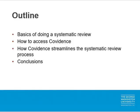Here is an outline of the topics that will be covered in this session. First, we'll look at the basics of doing a systematic review. After that, we'll briefly discuss how to access Covidence and get an account, and then look at how Covidence can help streamline many of the steps required in performing a systematic review. Then there will be some conclusions.